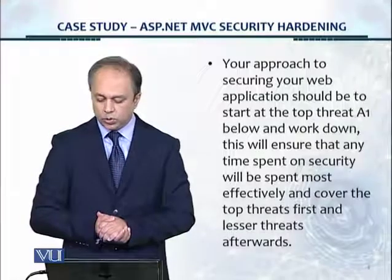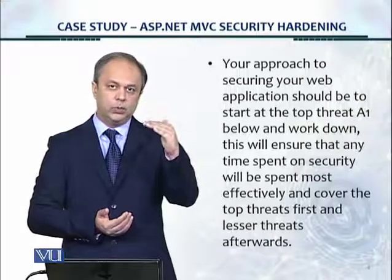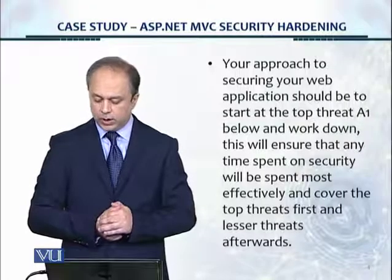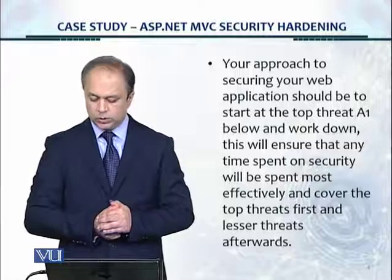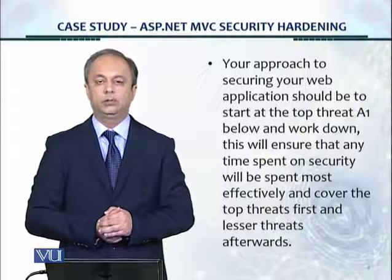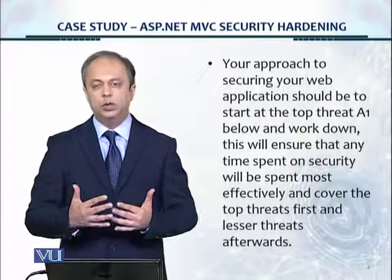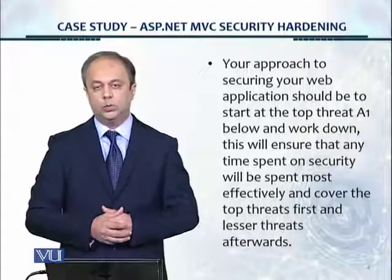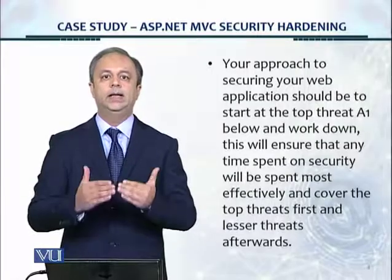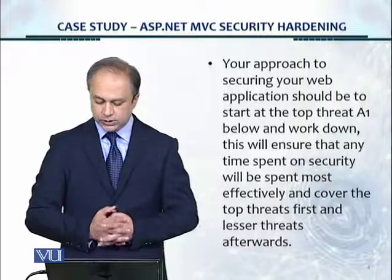Your approach to securing your web application should be to start at the top threat in the OWASP Top 10, which starts from A1 and goes to A2, A3, A4, all the way up to A10. Start at A1 and work down. This ensures that any time spent on security is spent most effectively, because A1 is the most severe and most common vulnerability with the greatest impact, followed by A2, A3, and A4. Cover top threats first and lesser threats afterwards.